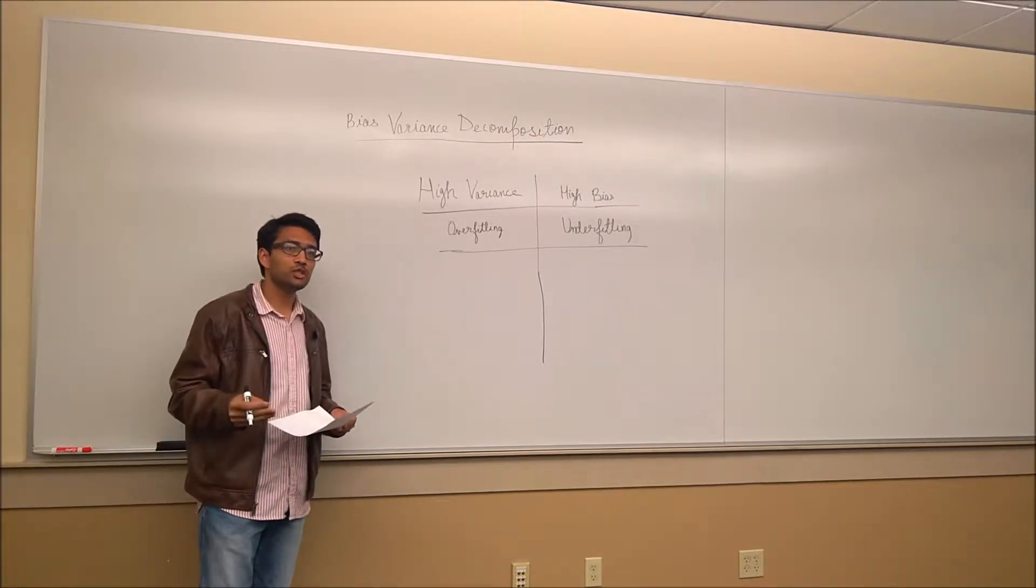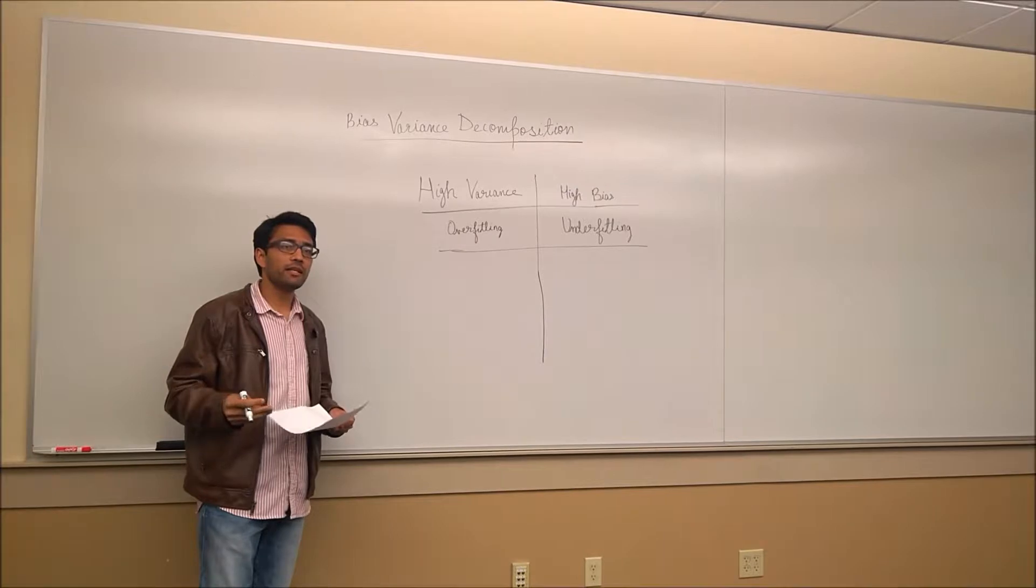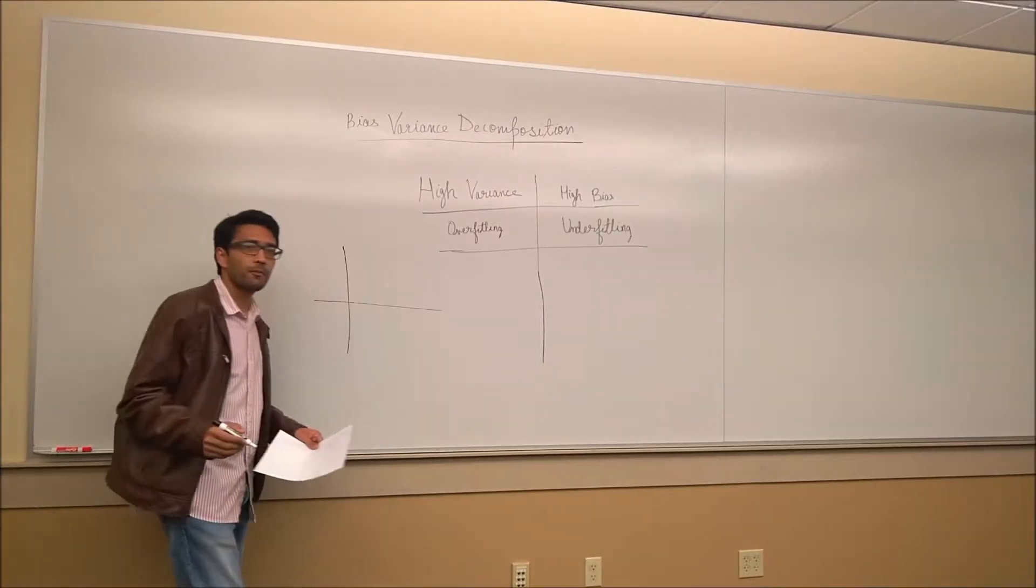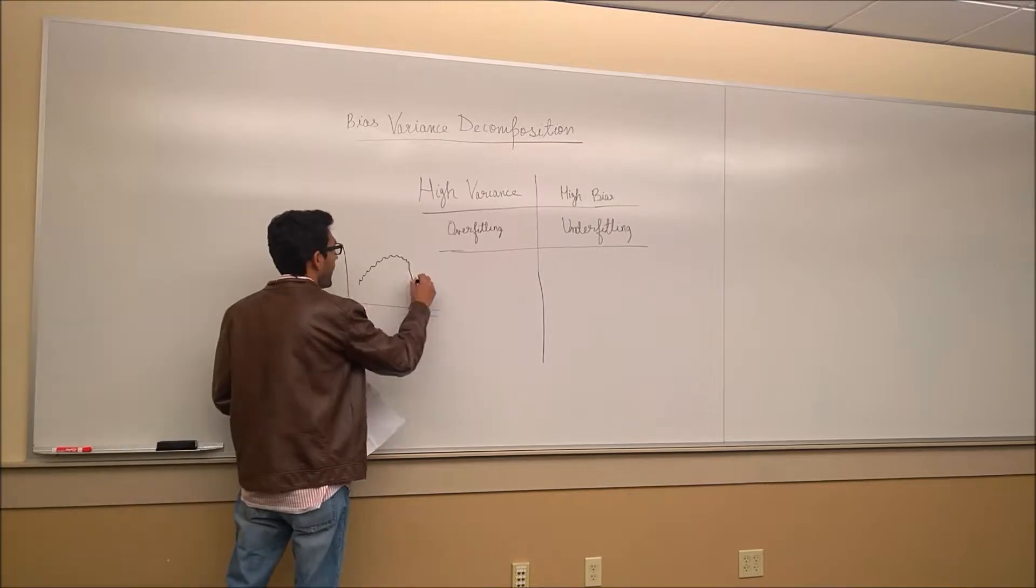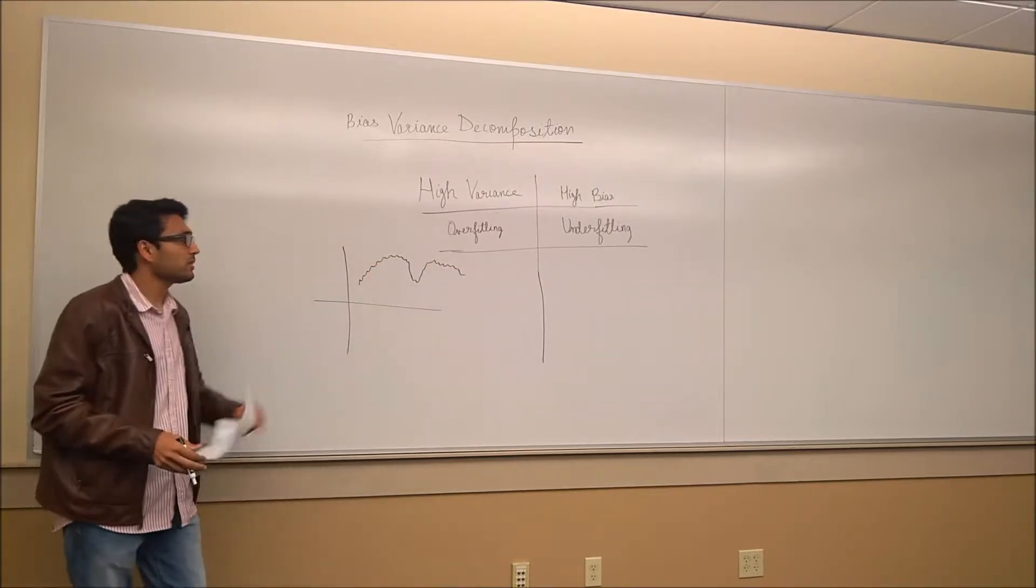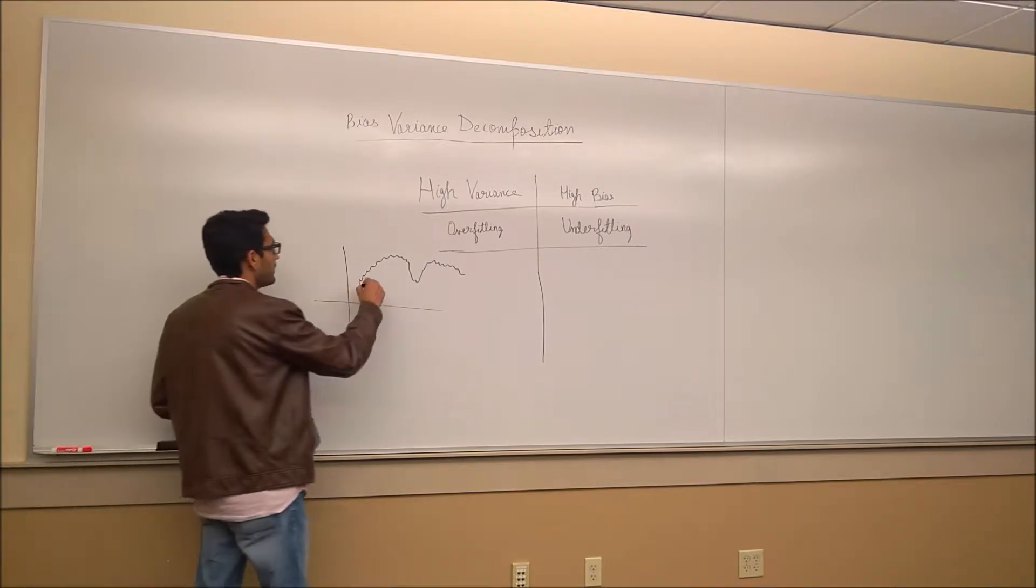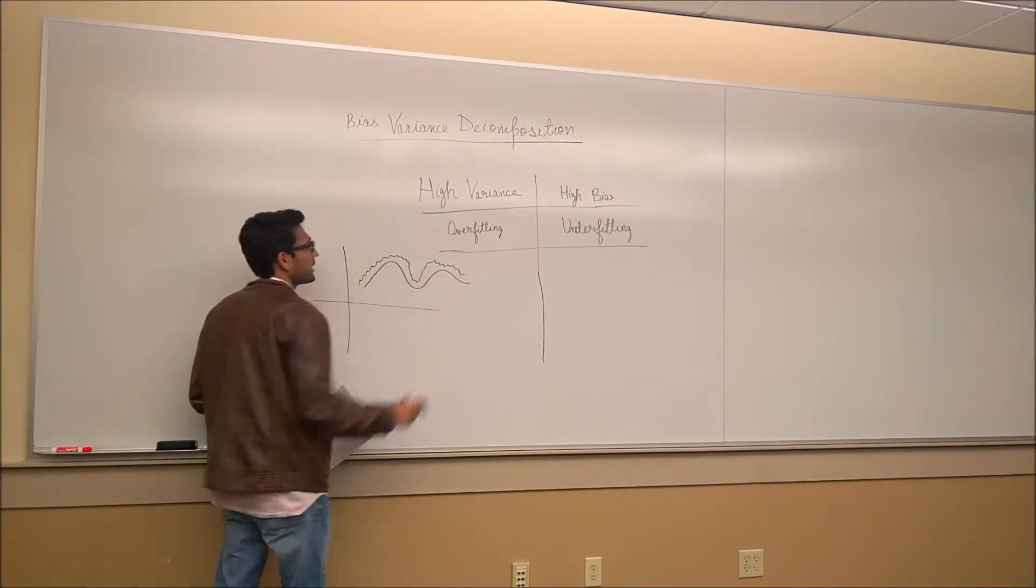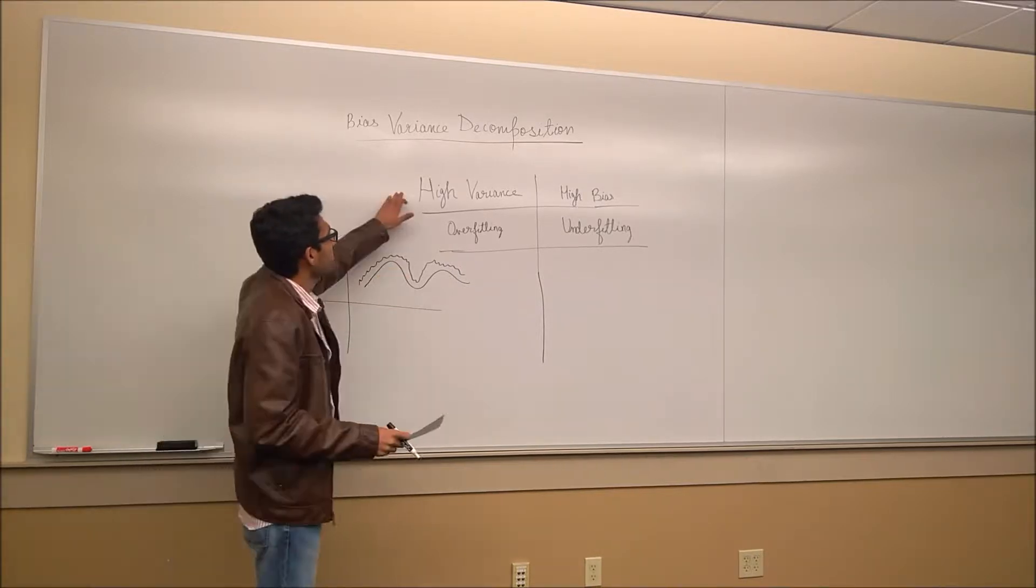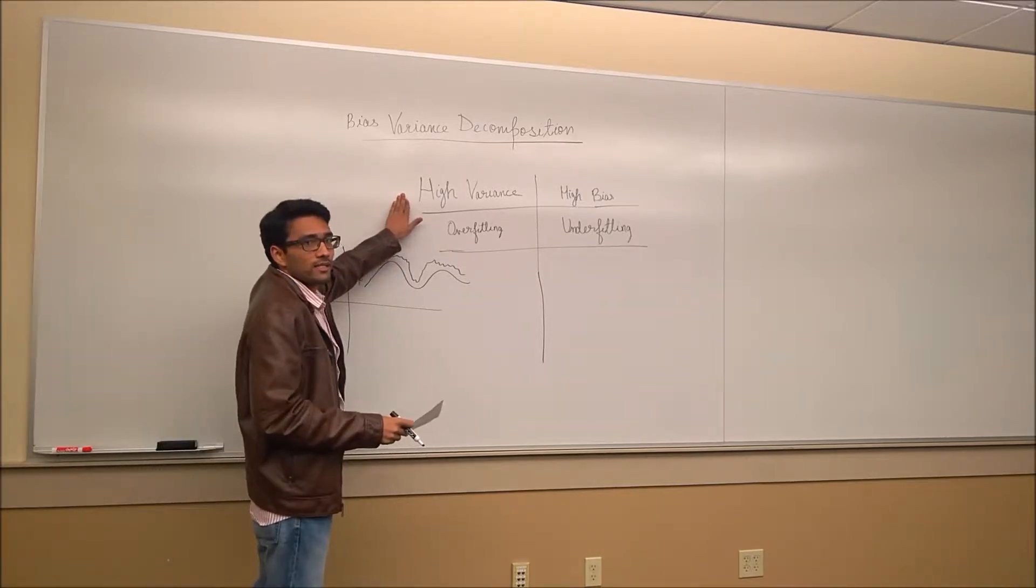By variance, we mean how much the predictor that we are building varies its output. Let's say I have a predictor which has an output of something like this. So this has a higher variance than something like this. This is what we usually say that our model has high variance.